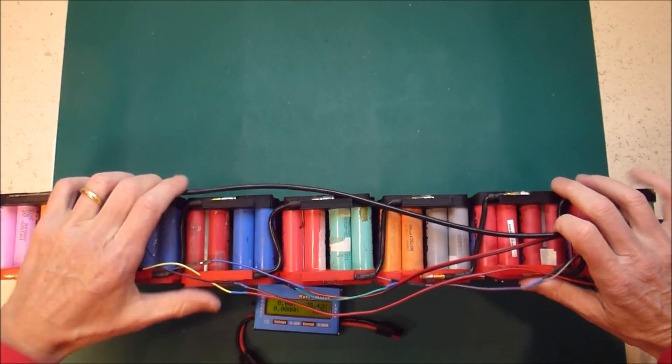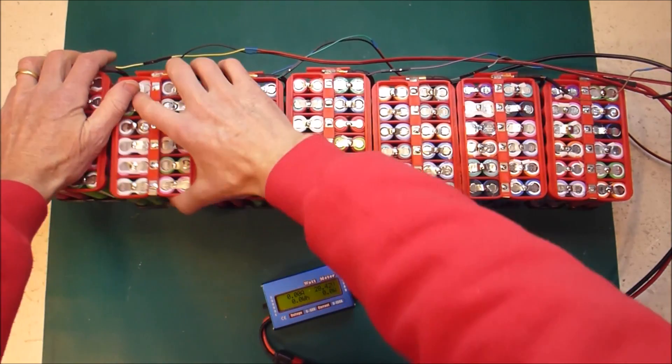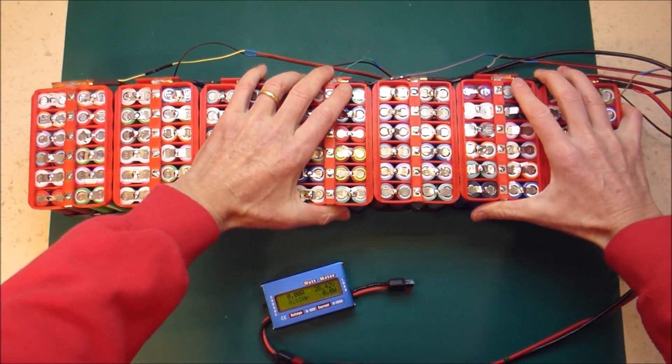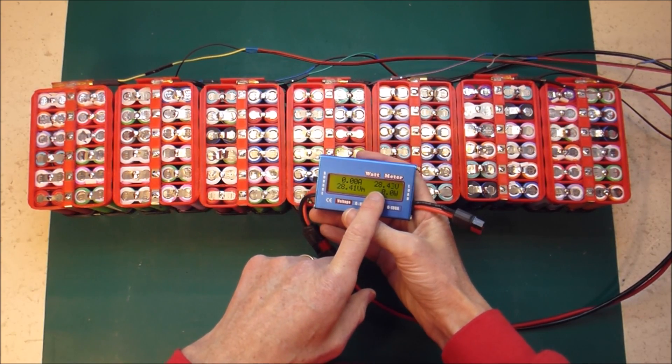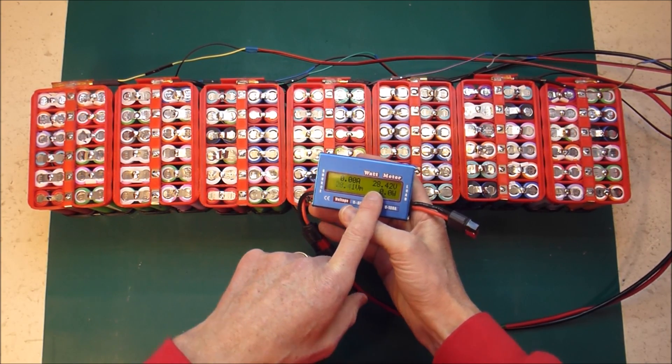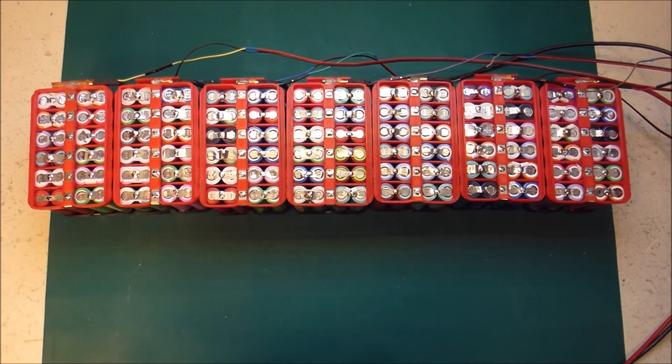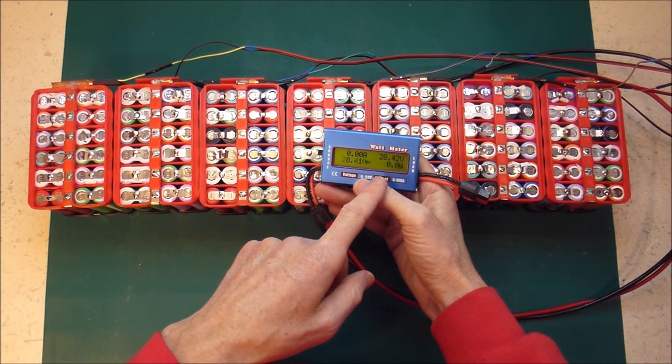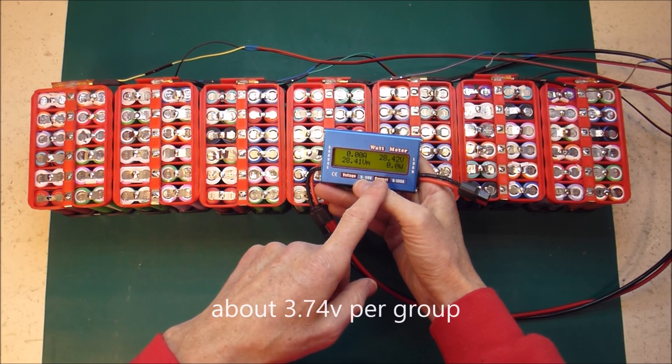All I need to do now is discharge it a bit so that that comes down to the same voltage as the other 4 kilowatt hours. The 4 kilowatt hour pack is sitting at 26.2 volts.